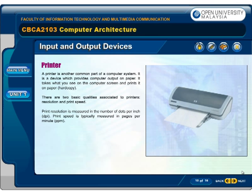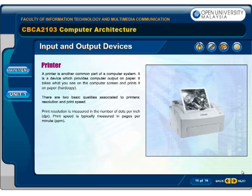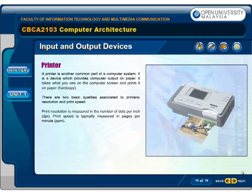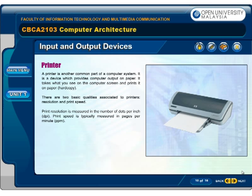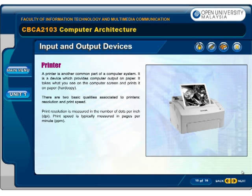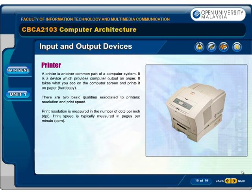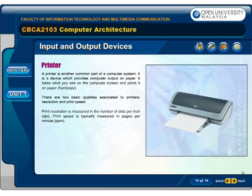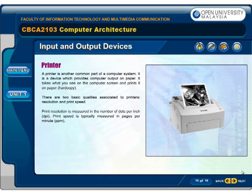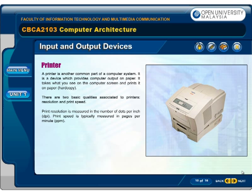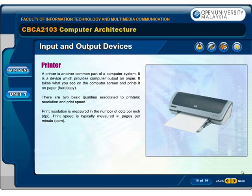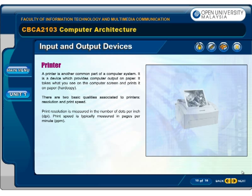A printer is another common part of a computer system. It is a device which provides computer output on paper, taking what you see on the computer screen and printing it on paper or hard copy. There are two basic qualities associated with printers: resolution and print speed. Print resolution is measured in dots per inch (DPI), and print speed is measured in pages per minute (PPM).